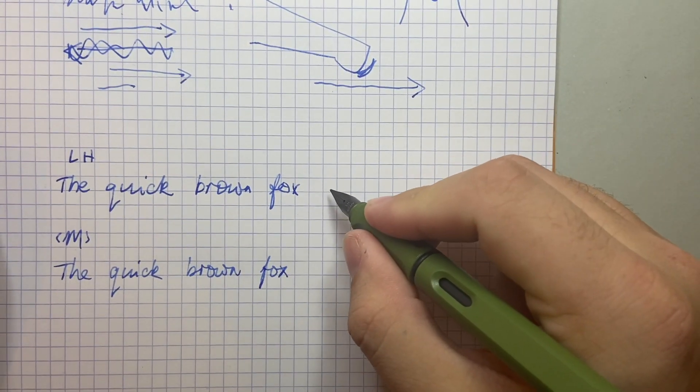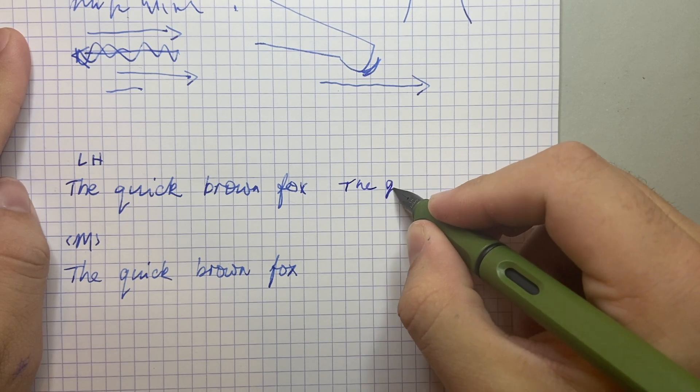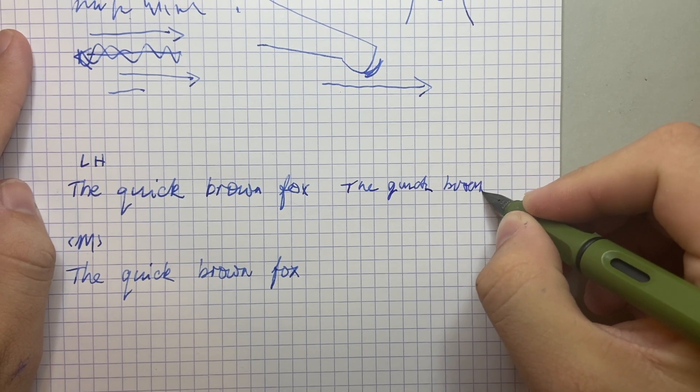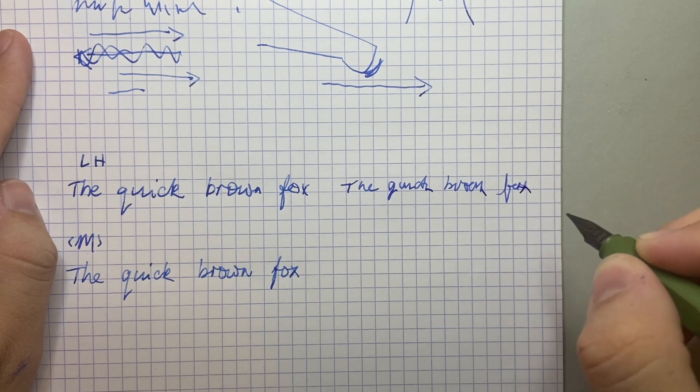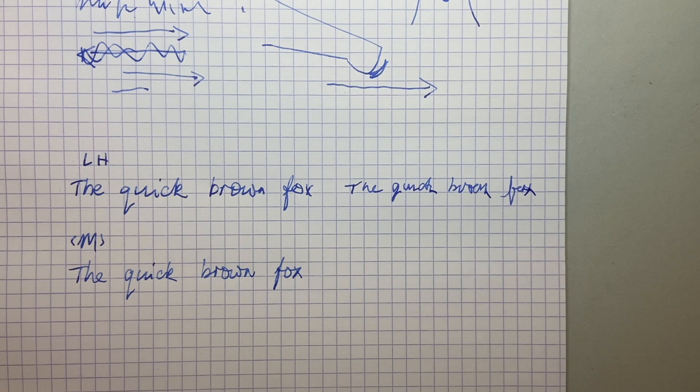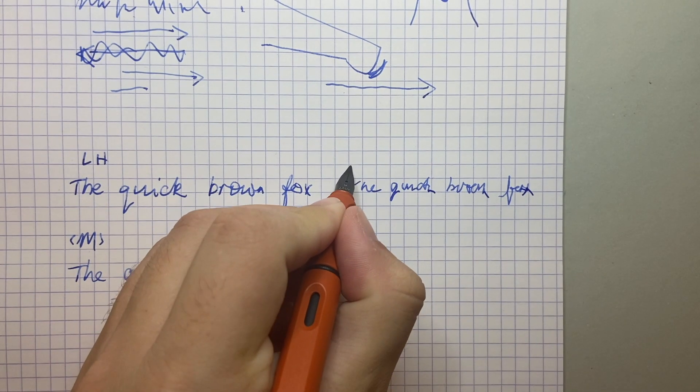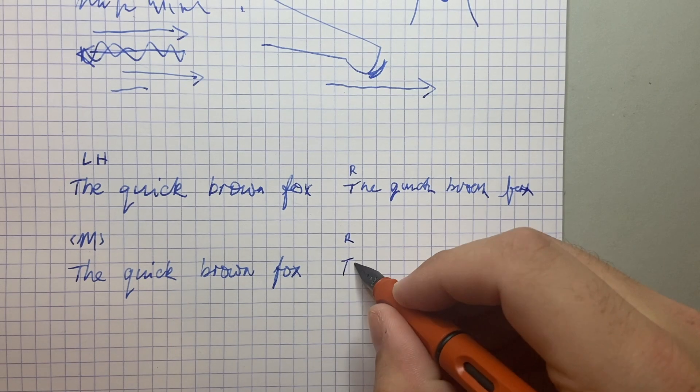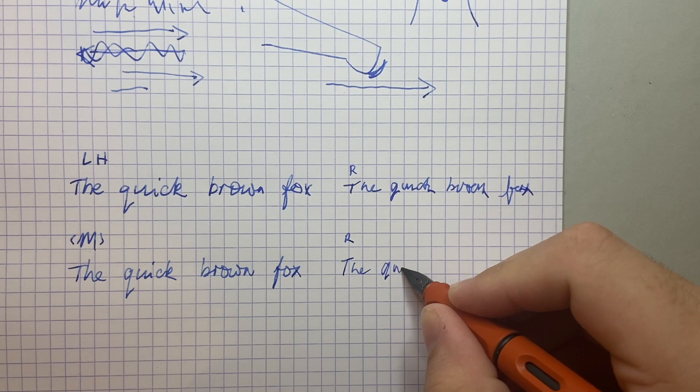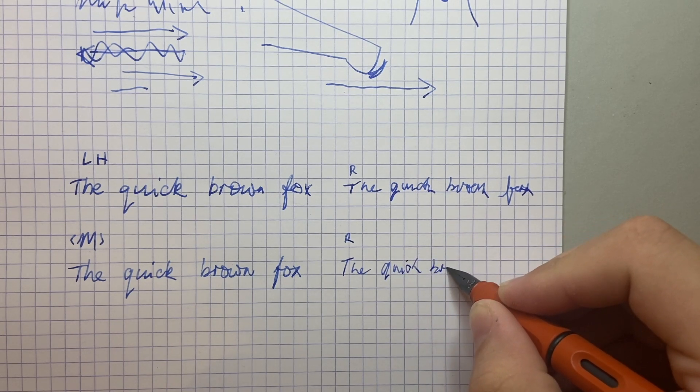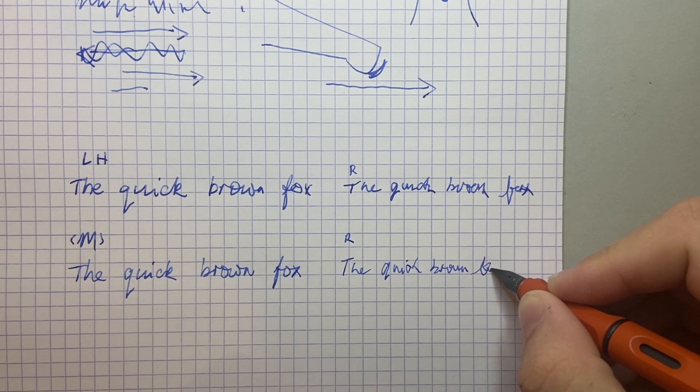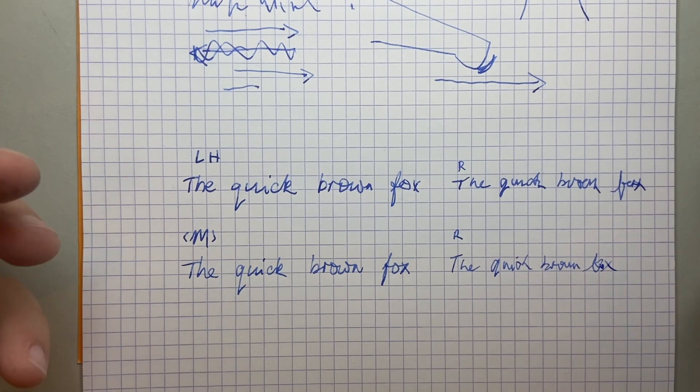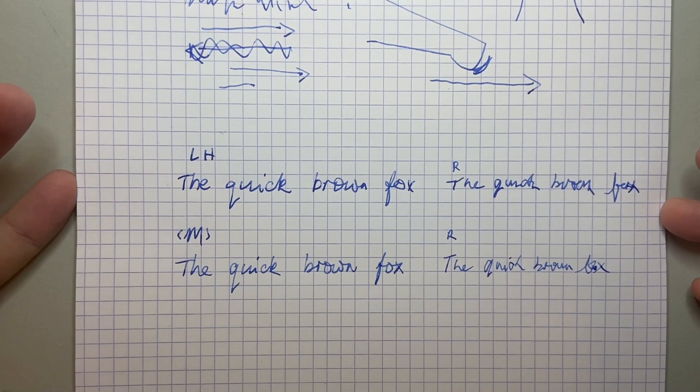Now, excuse my right-handed writing. It's also hard writing around a camera tripod and all that sort of stuff. So, that was the left-handed nib with the right hand. And then we'll go to the right hand with the standard medium. Okay. So, to my hand, I actually can't feel a huge difference, either left or right-handed, with either of these nibs. The differences are minimal.